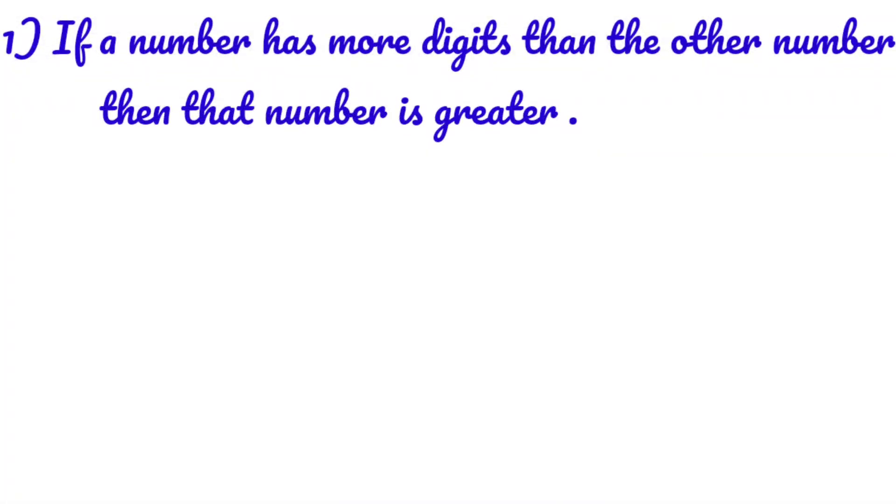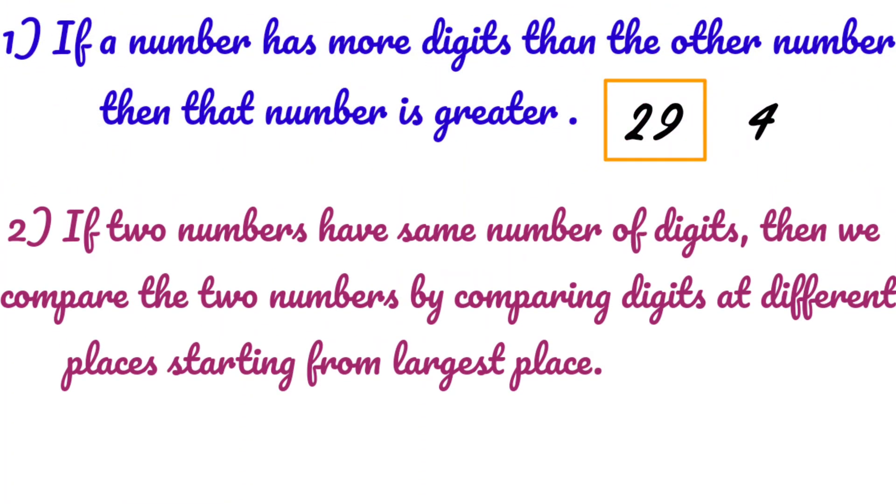Now what are the rules of comparison? If one number has more number of digits than other number then that number is greater. See 29 is having two digits and 4 is 1. So 29 is greater than 4.